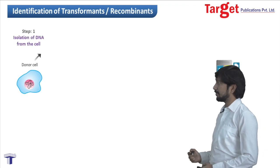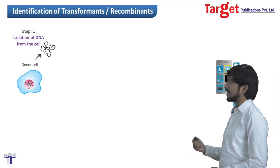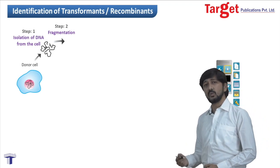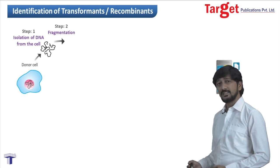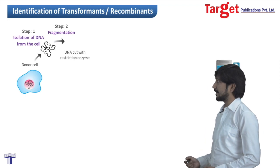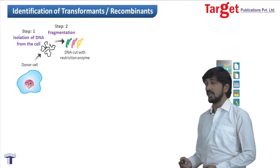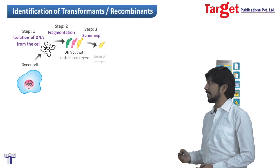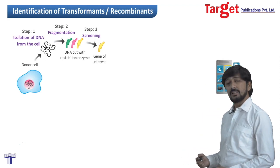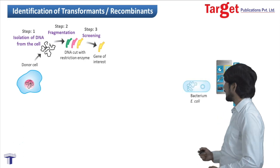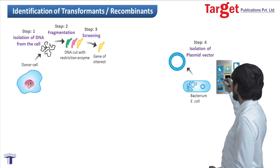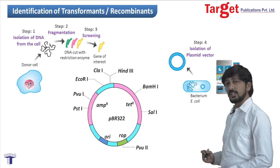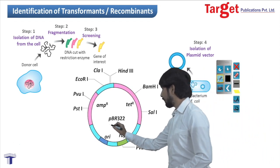The first step was isolation of DNA from the donor cell. The second step was fragmentation, in which we cut the DNA with the help of restriction enzymes. The third step was screening, in which we isolate the gene of interest. The next step is isolation of a plasmid vector.